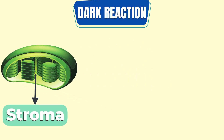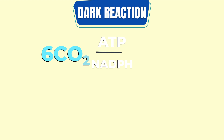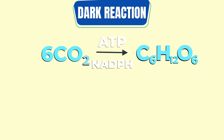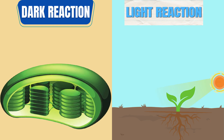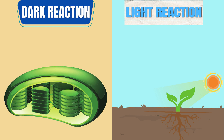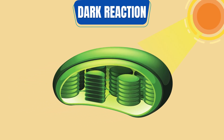The dark reaction takes place in the stroma within the chloroplast. Here, the ATP and NADPH are used to convert carbon dioxide into glucose through a series of chemical reactions called the Calvin Cycle. Both light and dark reactions take place during the day and happen side by side. The only difference is that a dark reaction does not involve the use of sunlight directly, but rather indirectly.